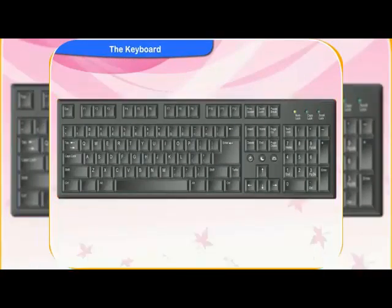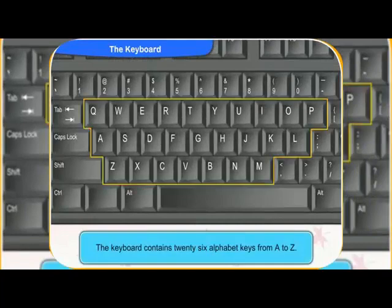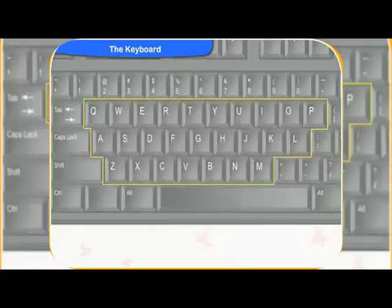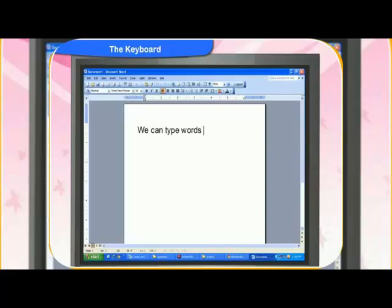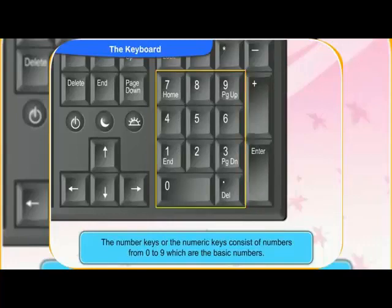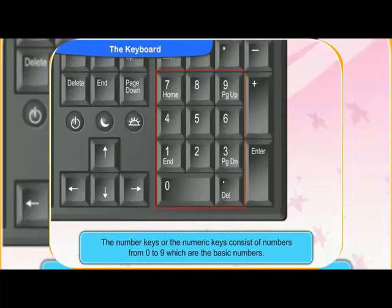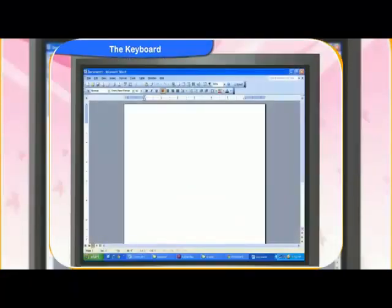Yes, I can see alphabets and numbers on the keyboard. Yes, the keyboard contains 26 alphabet keys from A to Z. We can type words and sentences in the computer using the alphabet keys. The number keys are also called the numeric keys. It consists of numbers from 0 to 9, which are the basic numbers. The numeric keys are used for typing numbers.